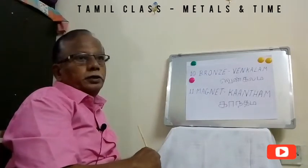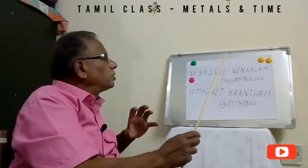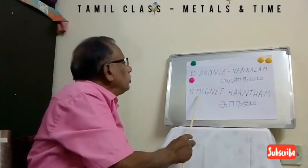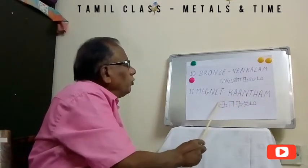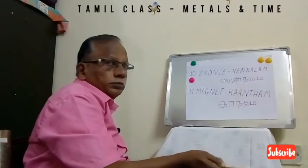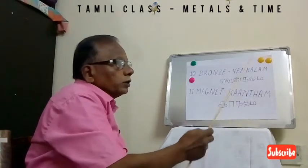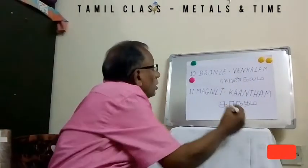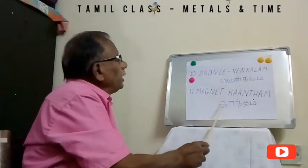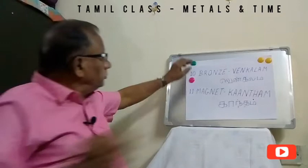The eleventh one is Magnet. Everybody knows that a magnet always shows north and south directions. It is called Kantham in Tamil. It has an attractive power called Kandha Shakti. Kantham is written K-A-A-N-T-H-A-M. In Tamil: Ka, this Ind, this is Tha, and this Im — Kantham.